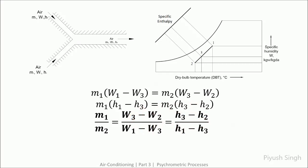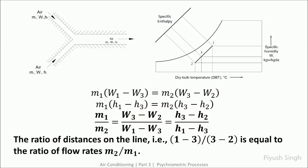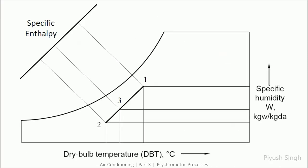The ratio of distances on this line — that is, distance 1-to-3 and 2-to-3 — is equal to the ratio between the mass flow rates. So the higher the mass flow rate at a given inlet point, the closer the outlet point is to that inlet point. This is how the process is represented on the psychrometric chart.